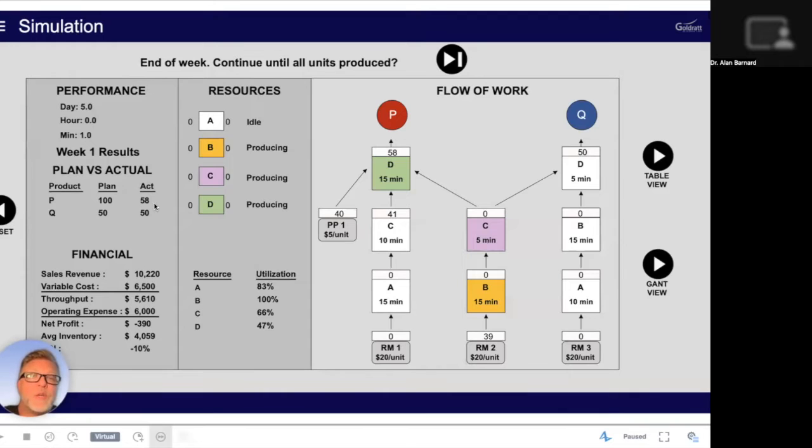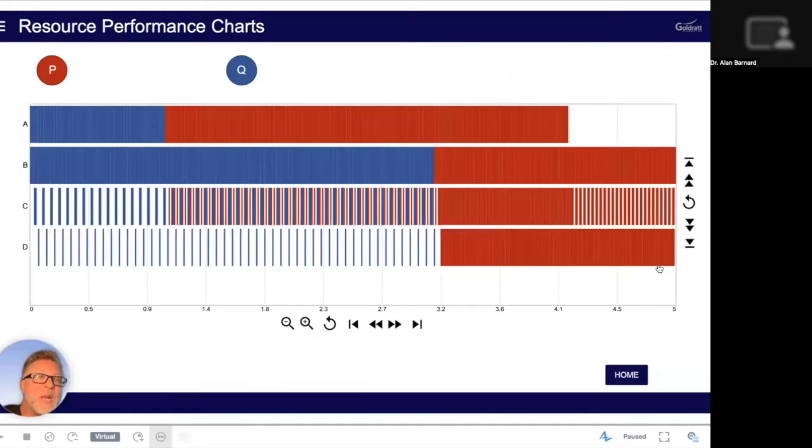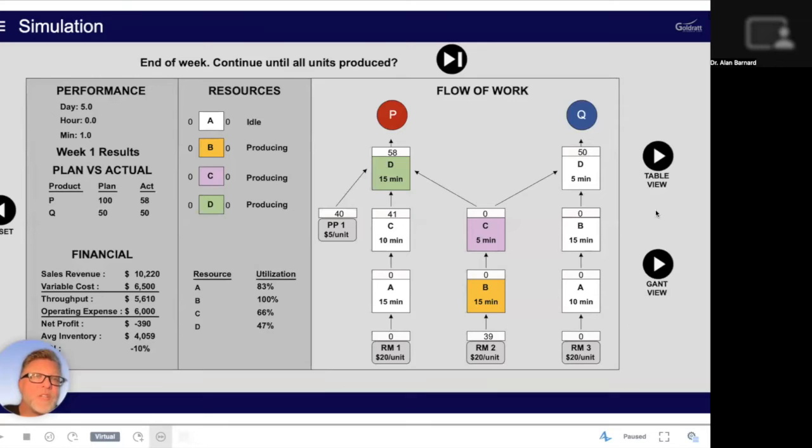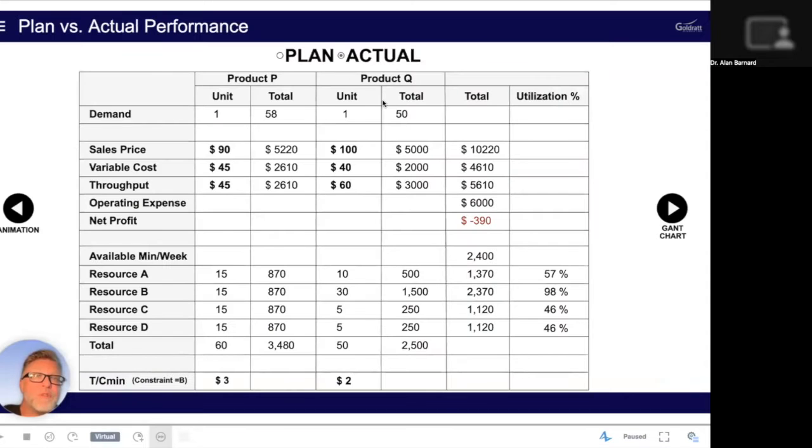Now, when you do static calculations, you could convince yourself that you could do 60 of P, but you really can't because of that initial lost time there on resources C and D because of the interdependency. But you can see here essentially what happens if we looked at that view of the actual, we would have lost $390 trying to produce as many Q as we can with the remaining capacity to do P.